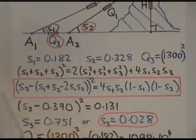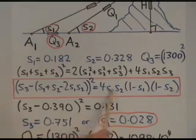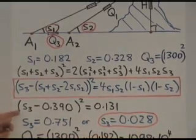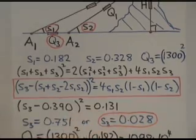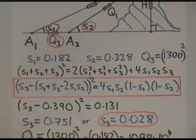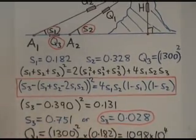We plug these two values of S1 and S2 into here, and the equation becomes S3 minus 0.390 squared equals 0.131. It's a quadratic equation, which has two solutions.